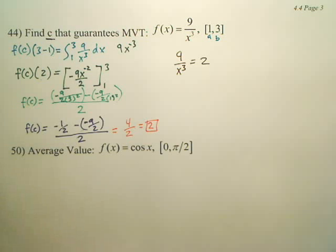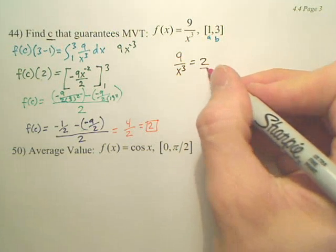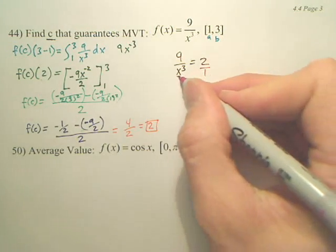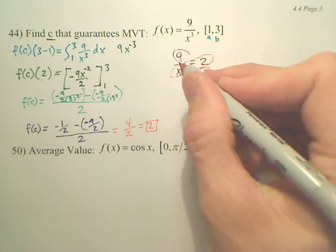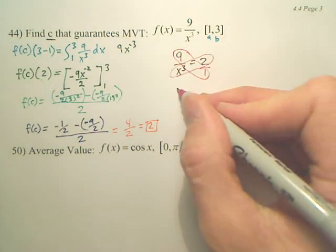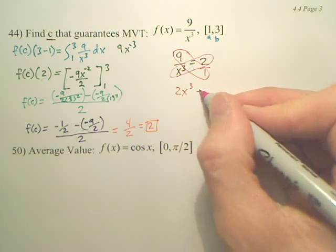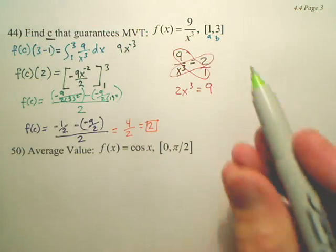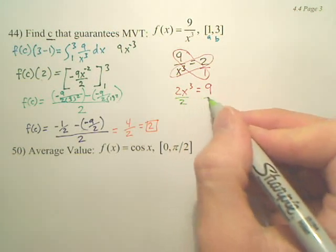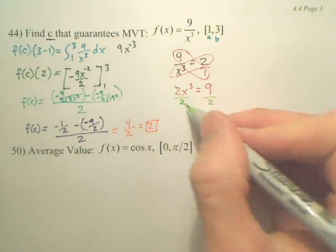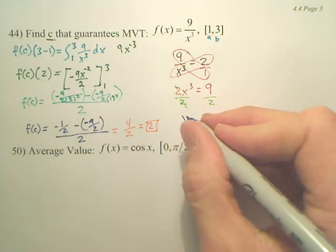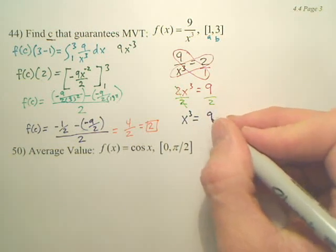Now, you could do different ways, but isn't this basically a proportion? Cross multiply. So I have 2x to the third equals 9. Divide by 2, divide by 2. So x to the third equals 9 over 2.